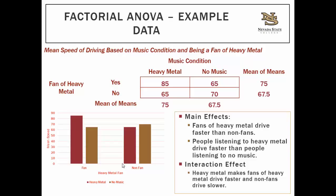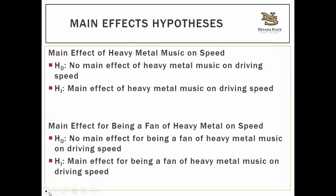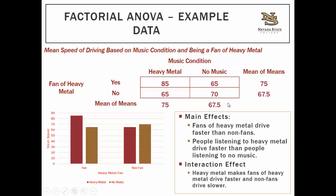Let's look at some sample data and interpret it. Fans who listened to heavy metal music had an average speed of 85 mph. Non-fans listening to heavy metal had an average speed of 65 mph. In the no music condition, fans averaged 65 mph and non-fans averaged 70 mph.